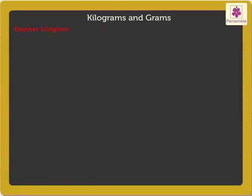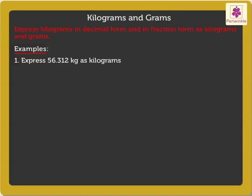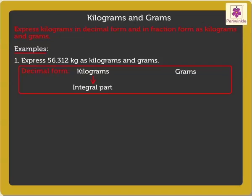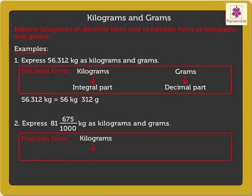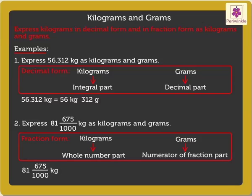Next, let's express kilograms in decimal form and in fraction form as kilograms and grams. Express 56.312 kilograms as kilograms and grams. We know that kilograms form the integral part and grams the decimal part. Thus, we get 56 kilograms and 312 grams. Express 81 and 675 upon 1000 kilograms as kilograms and grams. We know that kilograms form the whole number part and grams the numerator of the fraction part. We found the answer as 81 kilograms and 675 grams.